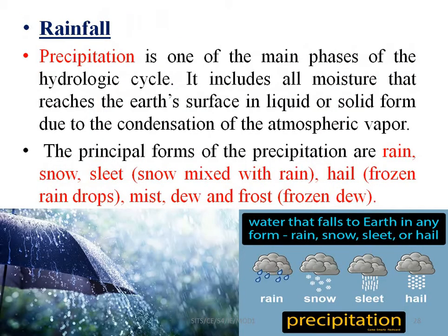This is rainfall — a type of precipitation. The forms of precipitation include rainfall, snow, sleet, hail, mist, and dew.